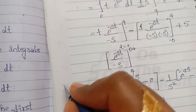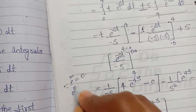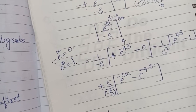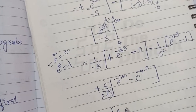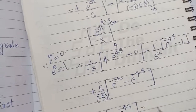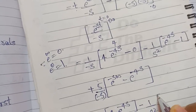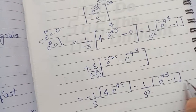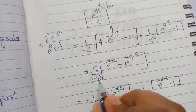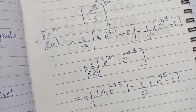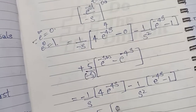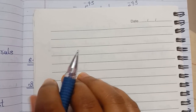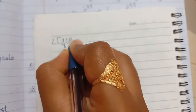Since e^(−∞) = 0 and e^0 = 1, the limit term simplifies. We get: −(1/s) · 4e^(−4s), minus (1/s²)(e^(−4s) − 1), plus 5 · (−1/s)(0 − e^(−4s)), which becomes −(1/s) · 4e^(−4s) − (1/s²)e^(−4s) + (1/s²), plus (5/s)e^(−4s).